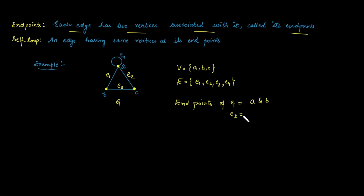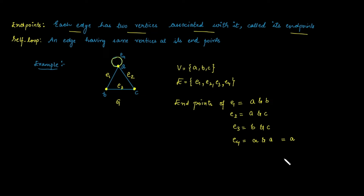The end points of E2 are A and C. The end points of E3 are B and C. Now for E4: E4 is an edge that starts and ends at the same vertex. So the end points of E4 are A and A, or we can say it has only one end point, A. There is a special name for such an edge — it is called a self-loop. A self-loop is an edge that has the same end point, so E4 is called a self-loop.